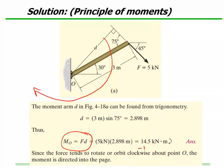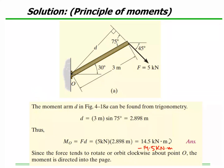I would suggest you just write minus 14.5 kilonewton meter. Don't mention the direction word if you are already mentioning the sign. So this is one way of calculating the moment: force into its perpendicular distance.